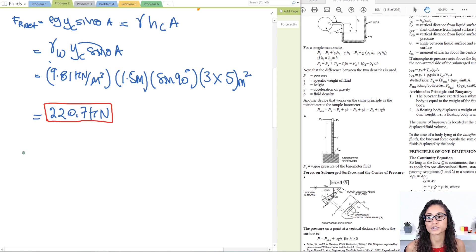Okay, so now let's solve for the location. So we have yr, or you can call it ycp, they're the same thing, is equal to yc plus the moment of inertia ixc divided by yc times the area.